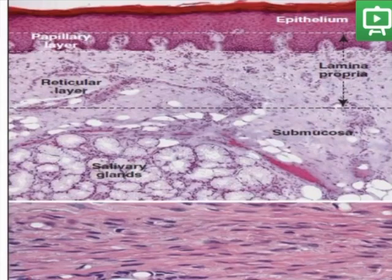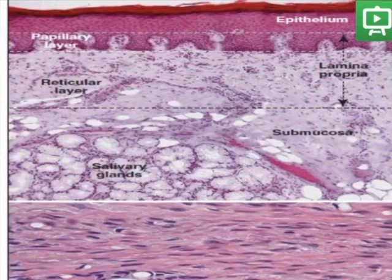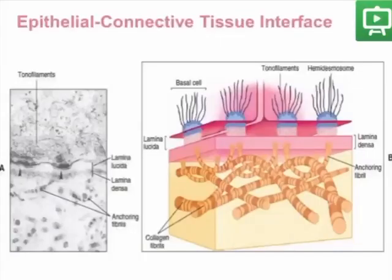The lamina propria, along with the submucosa, constitutes the mechanical protection and nutrition for the epithelium. The epithelial-connective tissue interface can be ultrastructurally divided into two layers: a lamina lucida and a lamina densa.